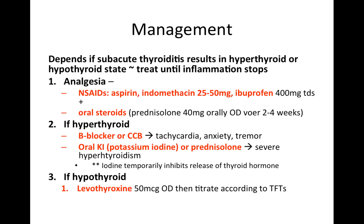In terms of management, the first step is analgesia — NSAIDs such as aspirin, indomethacin, or ibuprofen, as well as corticosteroids such as prednisolone over 2–4 weeks. If they're hyperthyroid, especially in the early stages, you can give beta blockers or a calcium channel blocker to reduce tachycardia, anxiety, and tremor. For severe hyperthyroidism, you can give oral potassium iodine or prednisolone, because iodine temporarily inhibits the release of thyroid hormone.